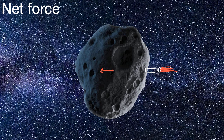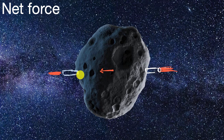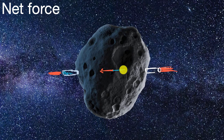But let's think about another example. Let's say you and a friend had a miscommunication and they went and put an identical rocket on the other side of the asteroid, and you both ignited it at the exact same time. Even though there's now twice as much force being exerted on the asteroid, it's going in opposite directions — so they zero out. There's zero net force, and the asteroid won't be accelerated at all.